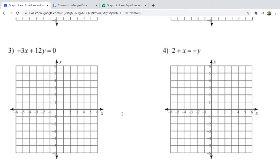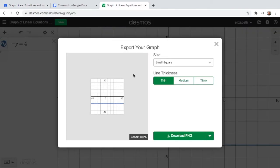So let's say we have number 3: -3x + 12y = 0. Manually you still need to solve for y, write it in slope-intercept form, and then graph. But this time you will just put -3x + 12y = 0.